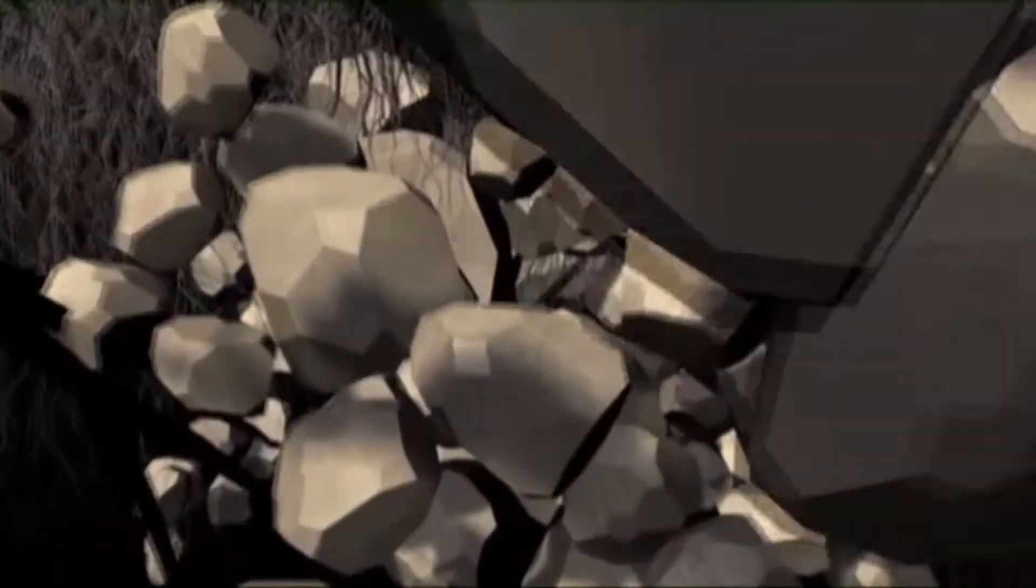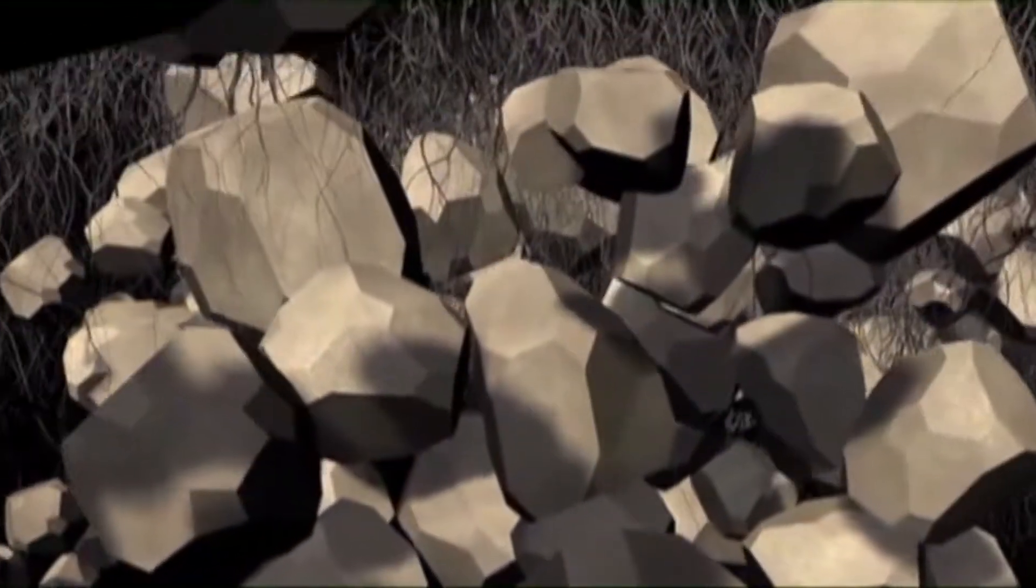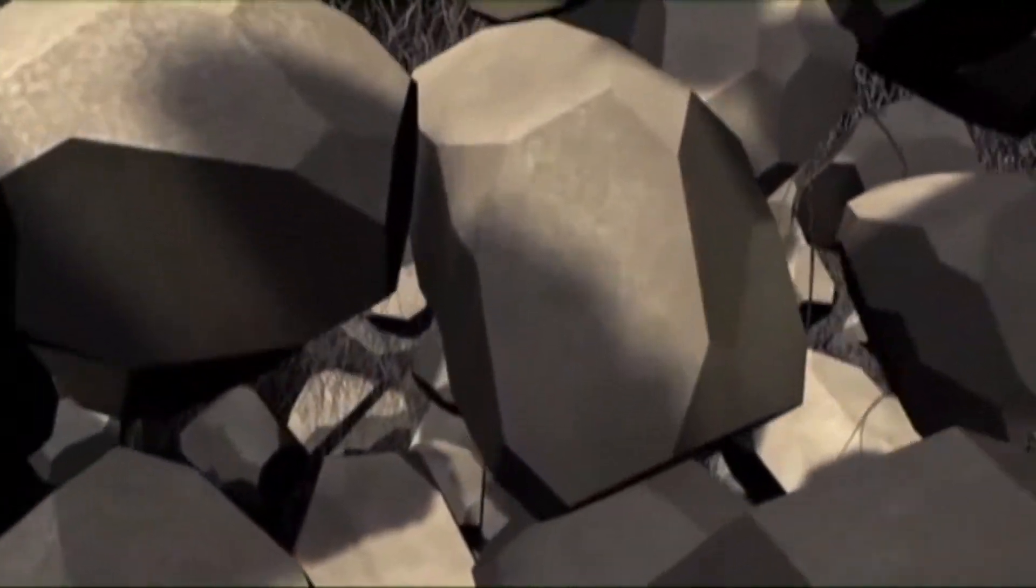Mycorrhizal spores attach to the roots of plants. These tiny filaments radiate out from the plant, increasing plant root zone area 100 to 1000 times greater.